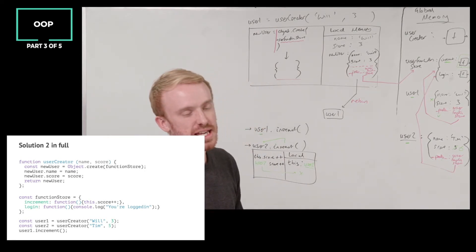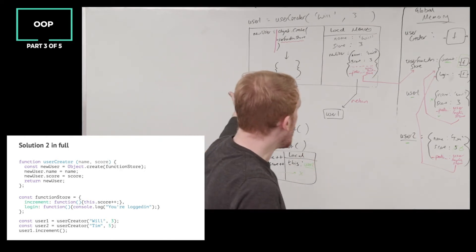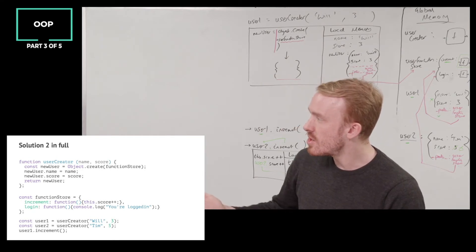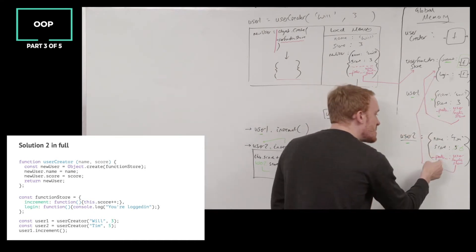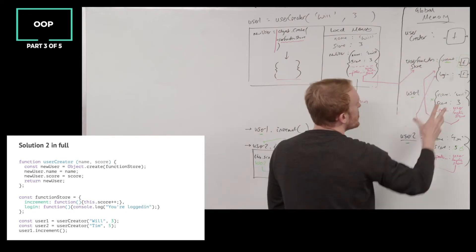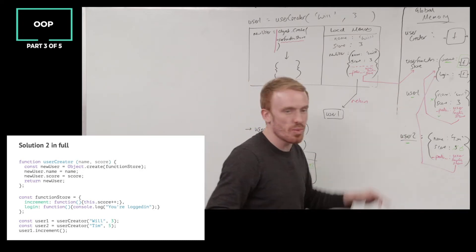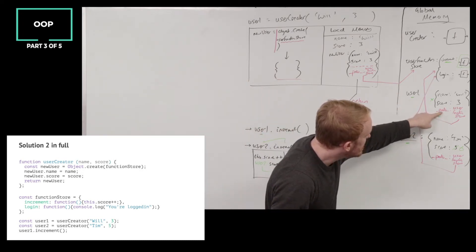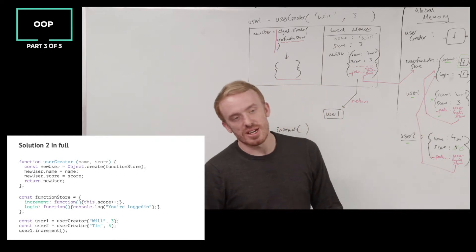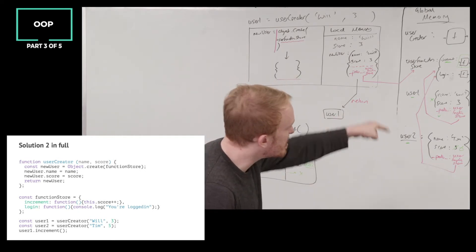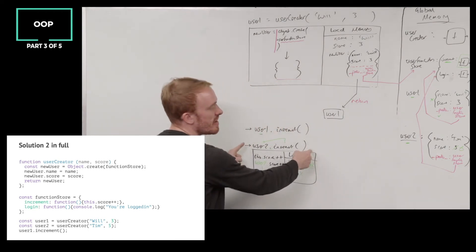We're going to see another way the this keyword works quite differently in a moment. Our first solution has been very successful. We've used the prototypal nature through this underscore proto underscore bond. Note: this does not say prototype. userFunctionStore is technically known as the prototype of user2 and user1. But the bond is stored in underscore proto underscore, not in something called prototype — we'll see a different property called prototype in solution three.